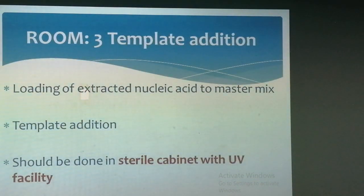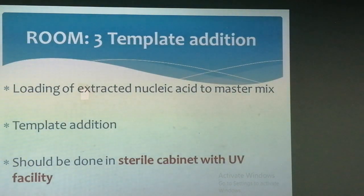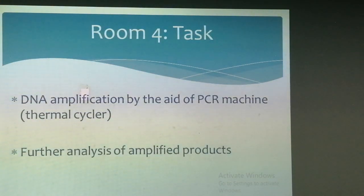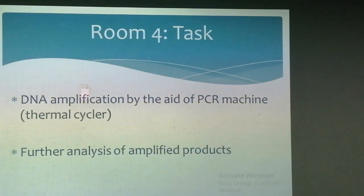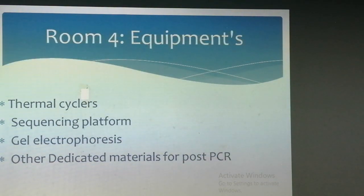Moving to room three, which is designated as the template addition room. In this room we add the extracted nucleic acid to master mix — the process is known as template addition. This should be done in a sterile cabinet with UV facility, or inside laminar airflow or PCR hood. In this room there should be negative pressure. Finally, room four — the post-PCR room — is for actual amplification of DNA by the PCR machine, and after amplification the DNA can be detected and subjected to further analysis. In this room we need a thermocycler for multiplication of DNA, and for further analysis we may need a sequencing platform, electrophoresis system, and other dedicated post-PCR facilities. This room should also have negative pressure.